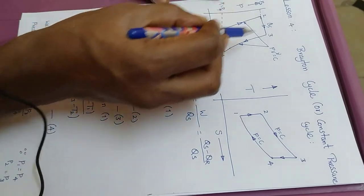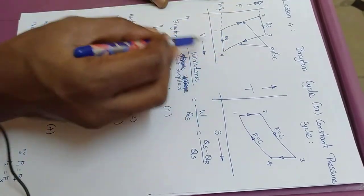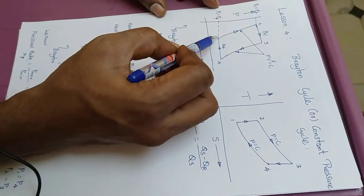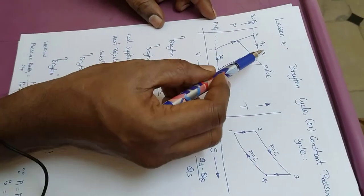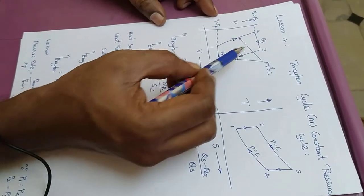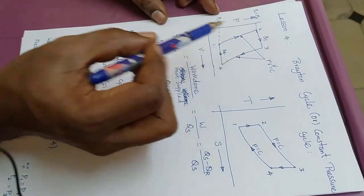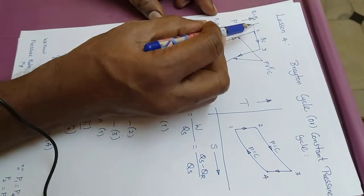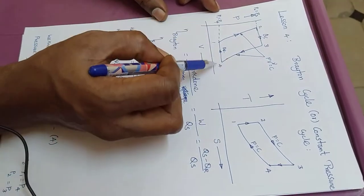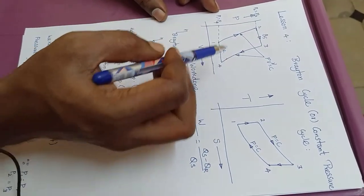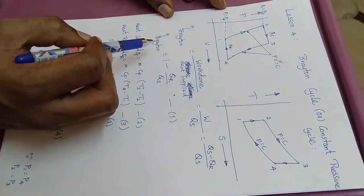This cycle consists of 4 processes. Processes 1 to 2 and 3 to 4 are isentropic processes, and processes 2 to 3 and 4 to 1 are constant pressure processes.